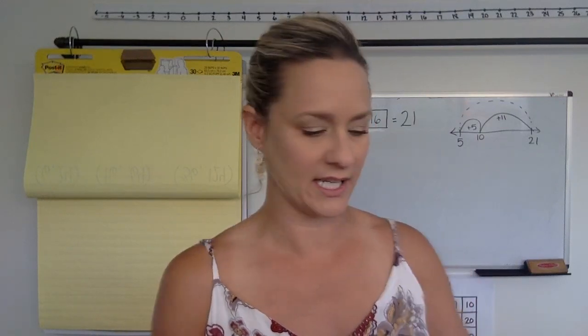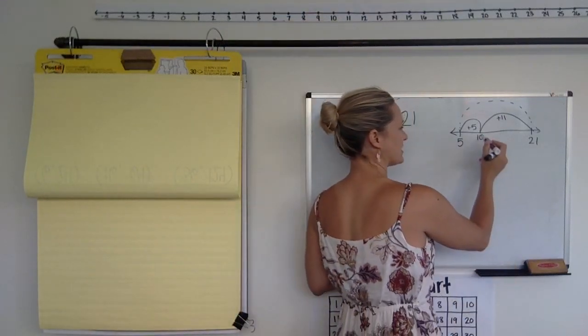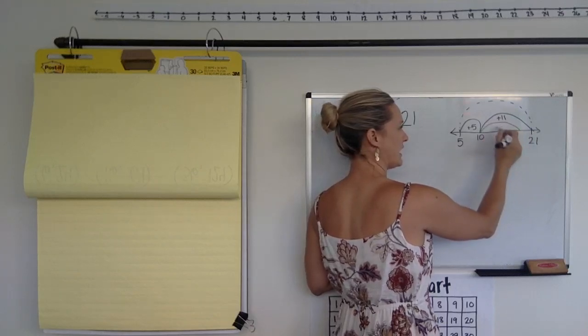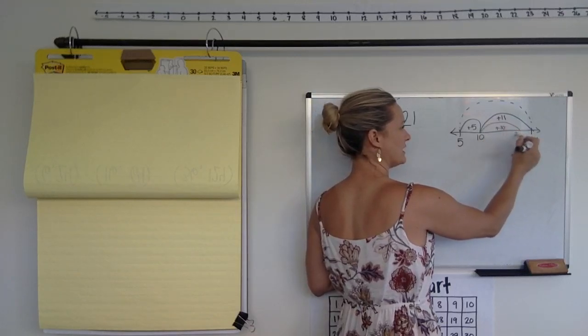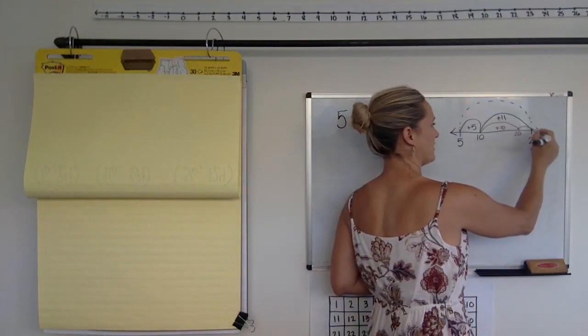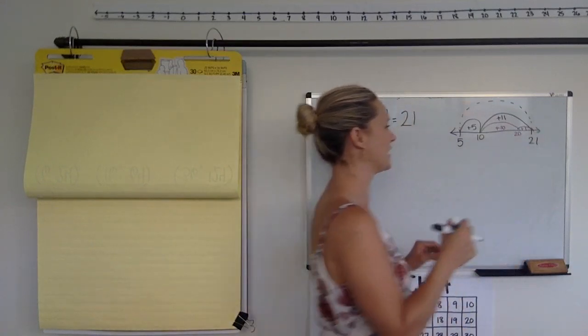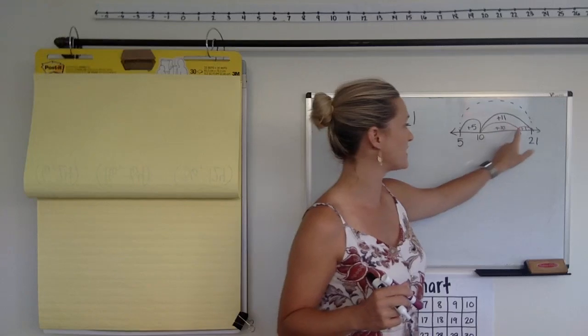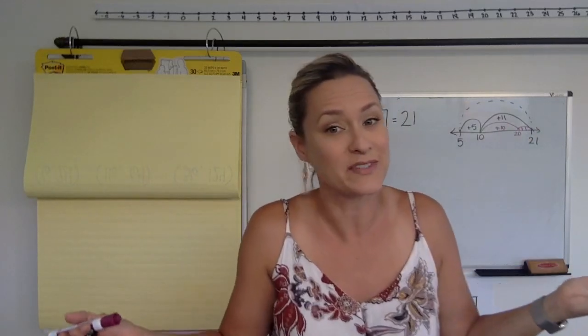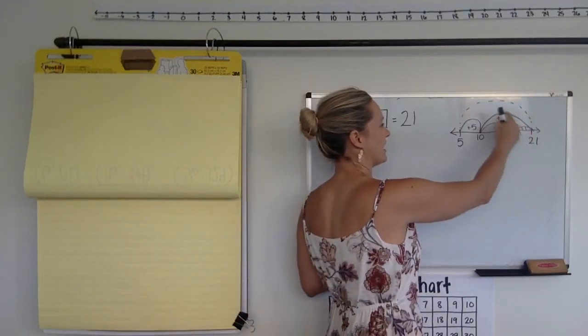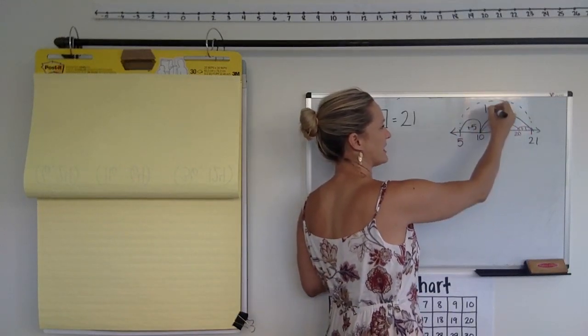I'm going to guess that some of you actually did another littler hop inside. So, maybe you did 10 plus 10 is 20. And then, you did the last hop is 21. So, maybe you did one big hop of 11. Or maybe you did a hop of 10 and a hop of 1. They both equal 11, right? So, then,